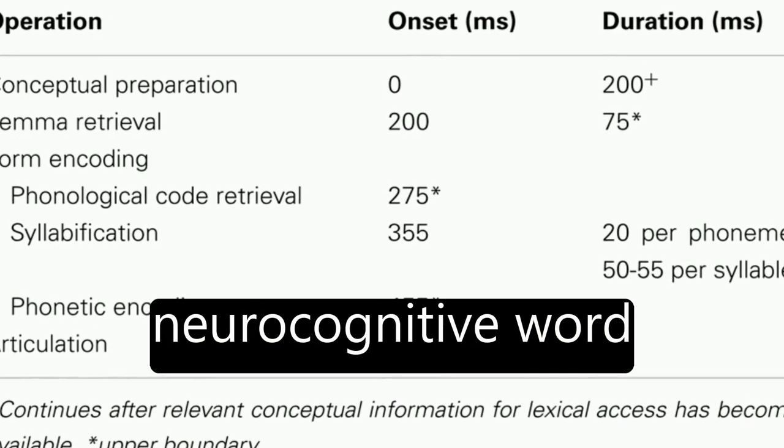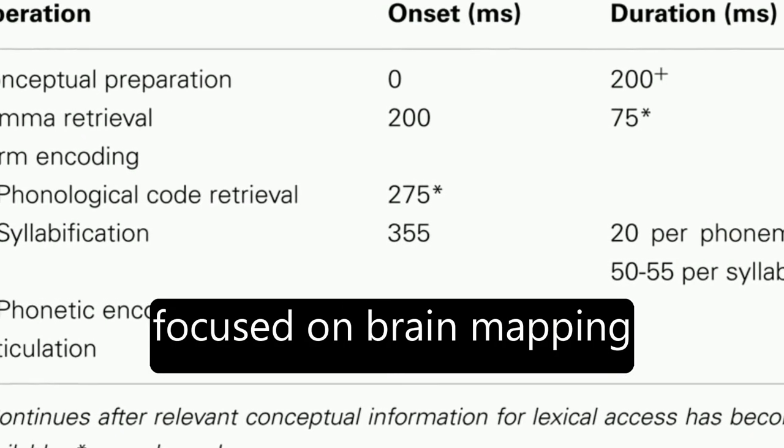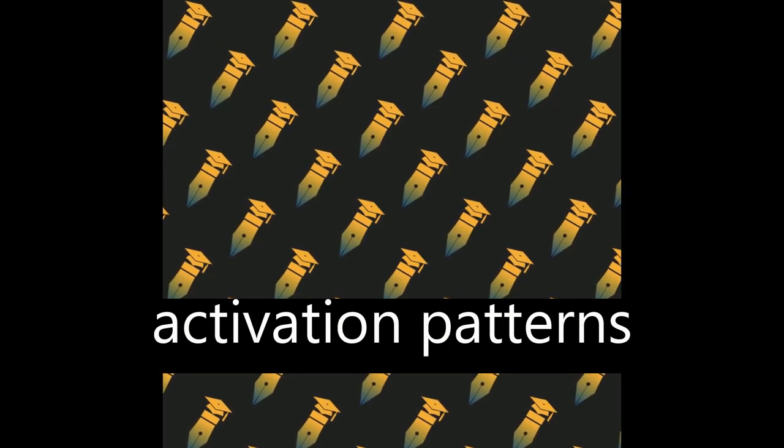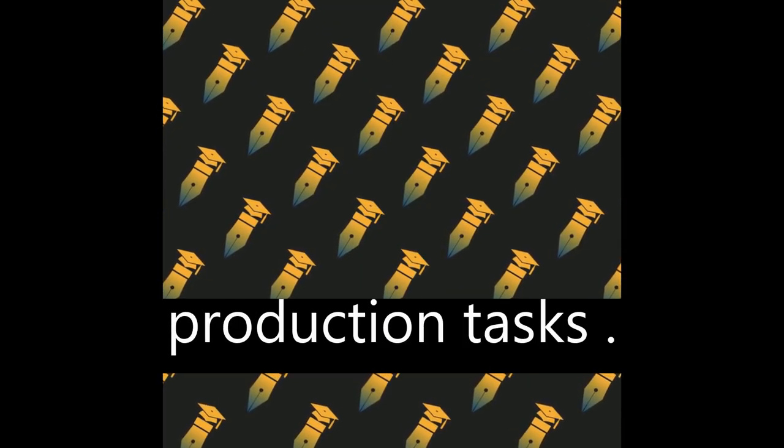The initial decade of neurocognitive word production research focused on brain mapping and investigating regional cerebral brain activation patterns correlated with word production tasks.